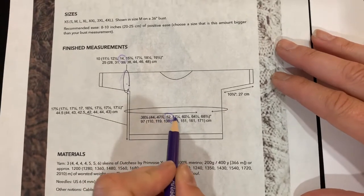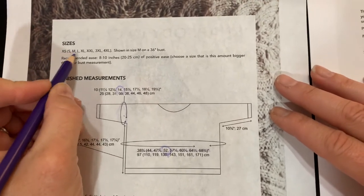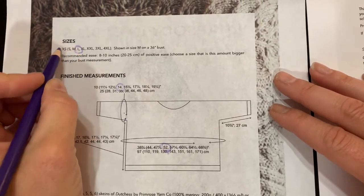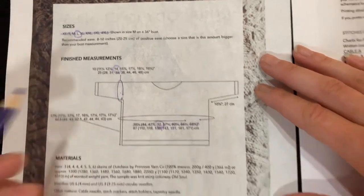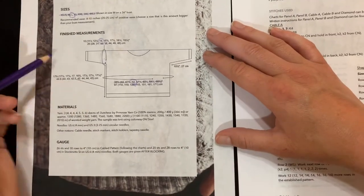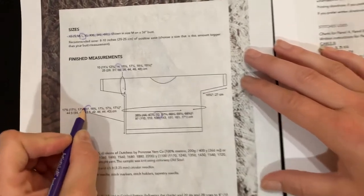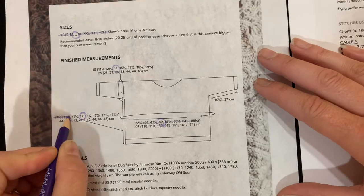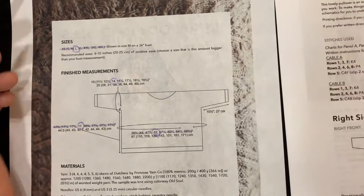So now I have my size determined here. I can cross off the numbers that no longer pertain to me and 1, 2, 3, 4. So this is the fourth size in. So then I'll just cross off the sizes up here that also do not pertain to me.